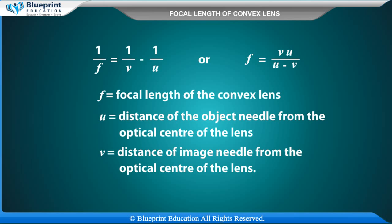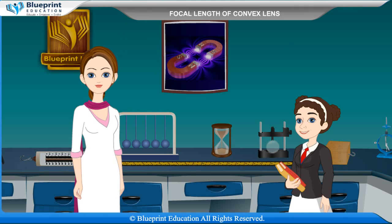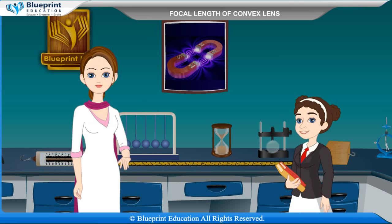Where F is the focal length of the convex lens, U is the distance of the object needle from the optical centre of the lens, and V is the distance of the image needle from the optical centre of the lens. Let's do an experiment to find the focal length of a convex lens by plotting graphs between U and V or between 1/U and 1/V.